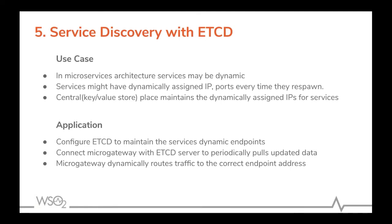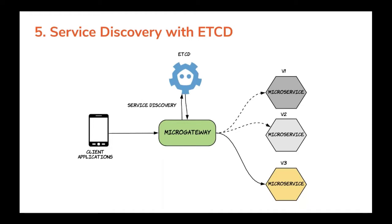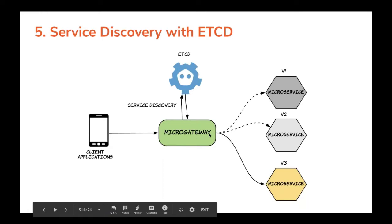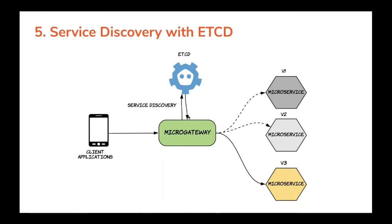This is another cool feature we added. In the microservices world, many services are coming and going so host names and IPs can be dynamic. If these dynamic host names and IPs are maintained in a key-value pair server like etcd, the micro gateway can connect to the etcd server and get real-time updates about backends, then route traffic to the correct backend. If a microservice respawns with a different service name, port, or host name, the micro gateway resolves the correct endpoint from etcd.